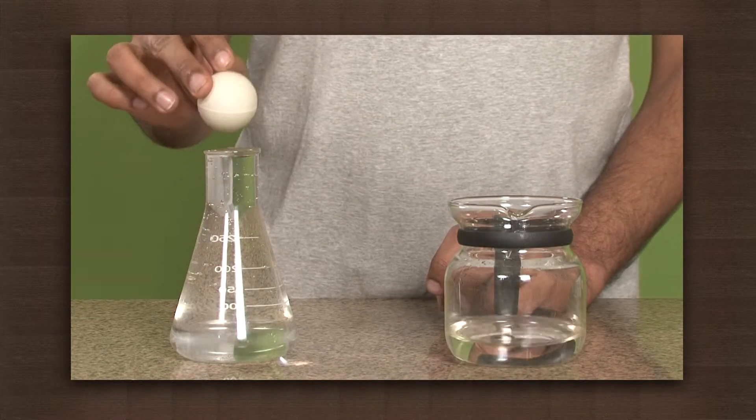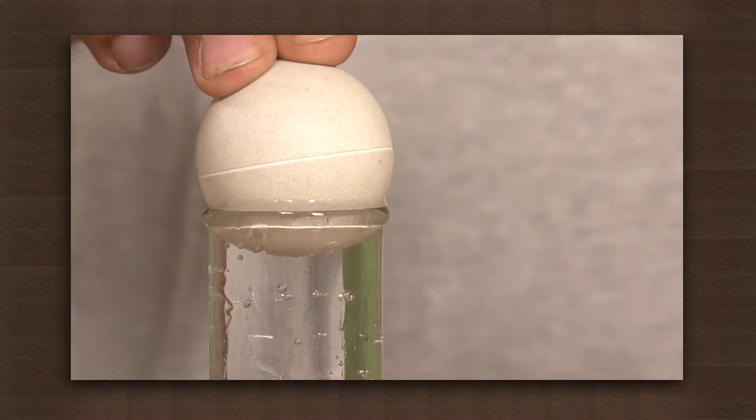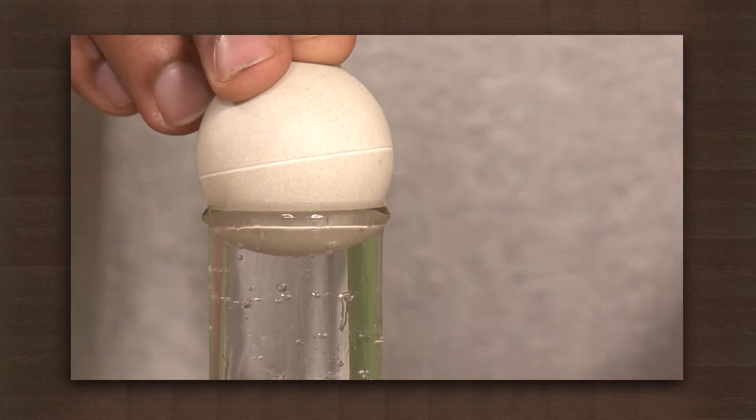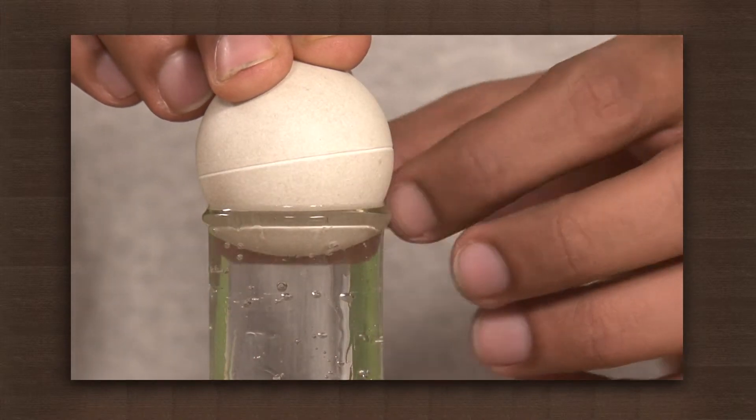Now place the plastic ball on the mouth of the flask. Press it so that the ball covers the mouth of the flask. The surface of the ball should be smooth so that there is no gap that will allow air to seep through.